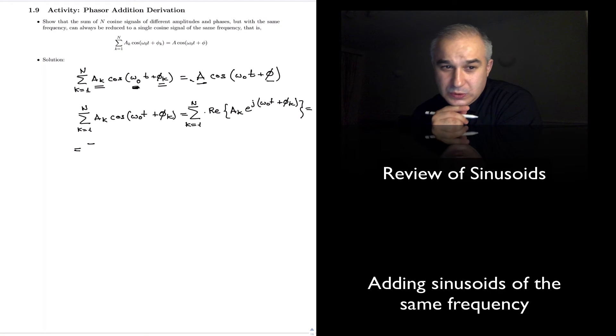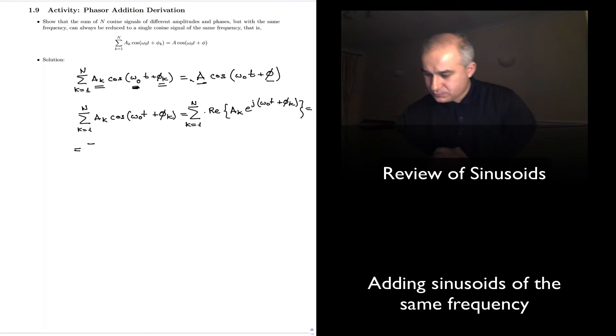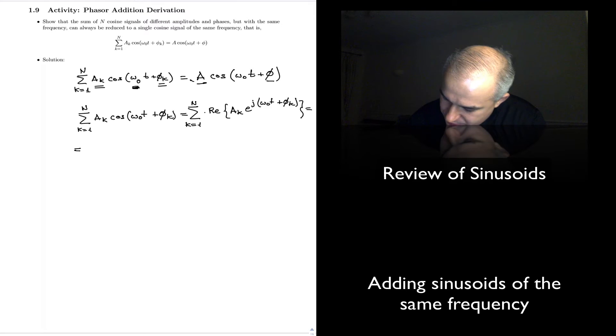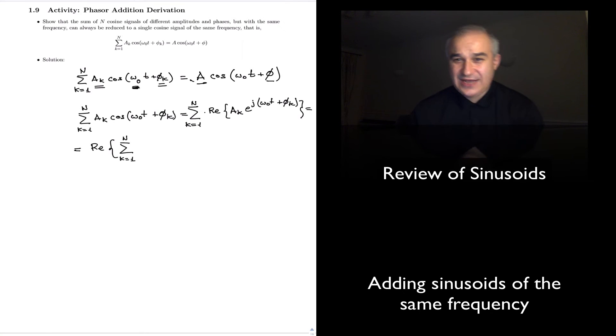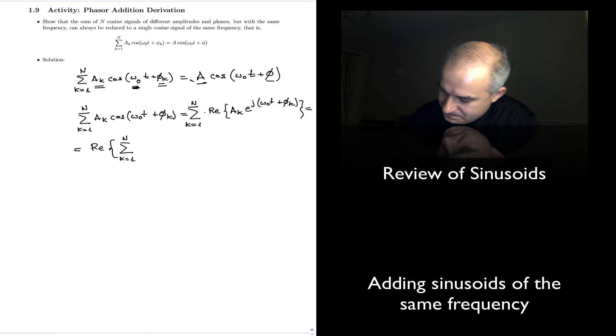I'm talking about the previous video in this particular playlist. So, this is going to be equal to the real part of, we are going to add, from k equals 1 to n. So, we are adding n sinusoids. n can be any positive integer.